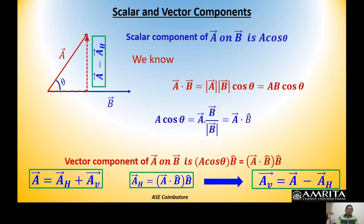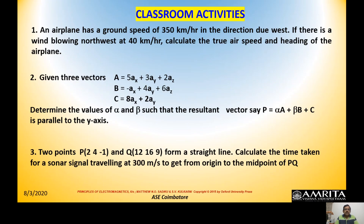The vertical component A_v is gotten as A_v = A − A_h, straightforwardly following from the head-to-tail rule and the triangular law of vector addition. Now let us take some numerical problems to reinforce the concepts learned over today's and the previous lecture.